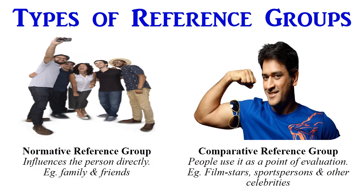We can divide the reference groups into two basic types. The first is the normative reference group, which directly influences the consumer's or the person's attitude and values. Examples of this kind of reference group can be parents, family members, and teachers, who influence the behavior of a person or a consumer directly.